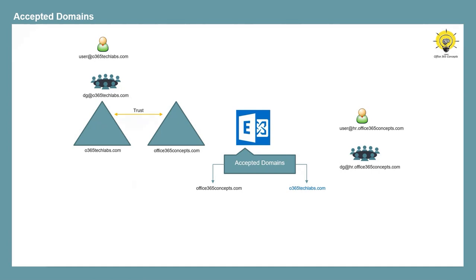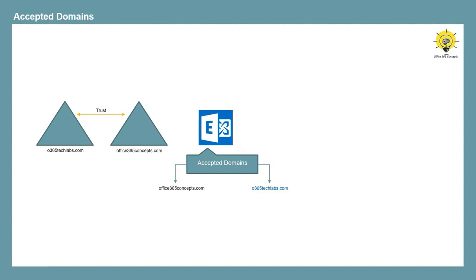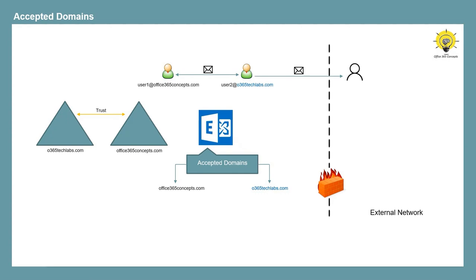Once you have added an additional domain under accepted domains, users can send and receive emails to each other internally. They can even send emails to external users as well, and for this you do not have to make any changes within your on-premise infrastructure. But if you want your users to receive emails from the internet, you need to publish an MX record for the additional domain in your public DNS. Only then will these users be able to receive emails from the internet.